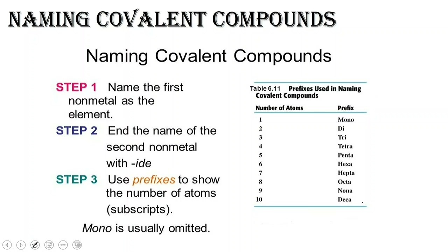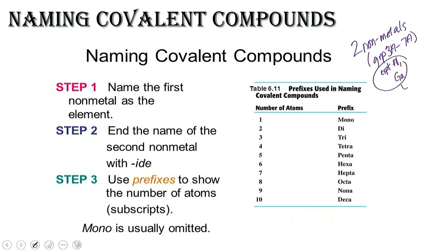We're looking at compounds that have two elements present and the first element is a non-metal. Covalent compounds are non-metals — two non-metals. When I say non-metals, that means anything in groups 3A to 7A, except for aluminum and gallium, which are metals. All of these elements in groups 3A to 7A are considered non-metals for the purpose of naming compounds — not for classifying elements, just for naming.